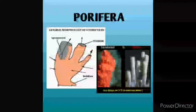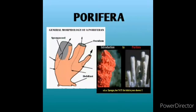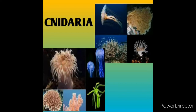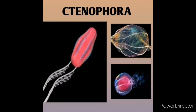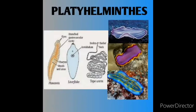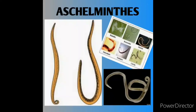The first phylum, Porifera, consists of sponges which are cylindrical with many pores all over the body surface. Cnidarians have a cylindrical body with tentacles and stinging cells on the tentacles. Ctenophora consists of comb jellies which have comb plates, and some have bioluminescent properties. Platyhelminthes are flat worms, whereas Aschelminthes consists of round worms. These are mainly endoparasites in our body.